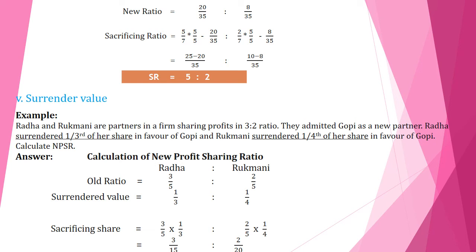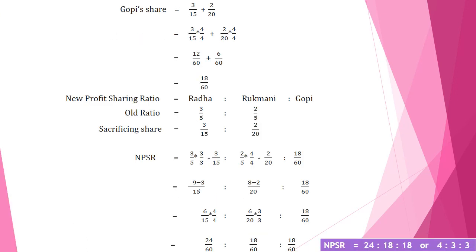The fifth topic is surrender value. Old partners surrender a portion of their profit share to a new partner. Rada and Rukmani are partners sharing profits in 3:2. They admit Gopi as a new partner. Rada surrendered 1/3 of her share and Rukmani surrendered 1/4 of her share towards Gopi. Rada's old ratio is 3/5 and Rukmani's old ratio is 2/5. To get the sacrificing share, multiply: 3/5 × 1/3 = 3/15 for Rada and 2/5 × 1/4 = 2/20 for Rukmani.